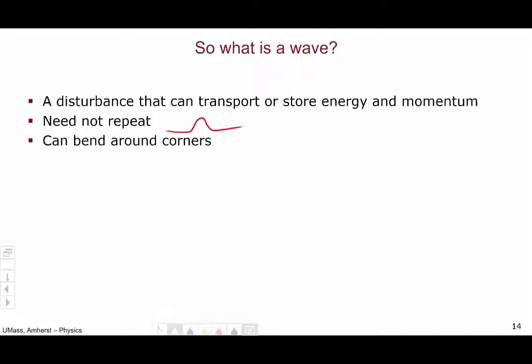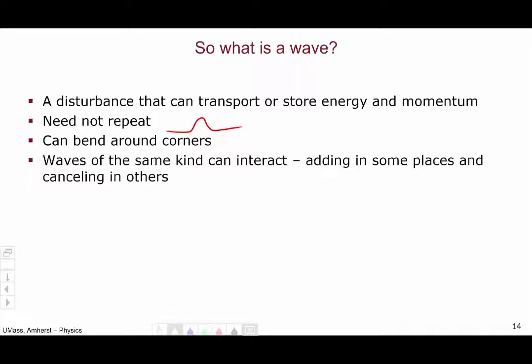A wave need not necessarily repeat. We can have those simple pulse waves that we talked about. But a wave can bend around corners, and waves of the same kind can interact with each other or with themselves, adding in some places, canceling in other places, through this idea of interference discussed in that video. So these are sort of the fundamental characteristics of waves. They don't exist at a particular place. They sort of spread out over a couple of different places. And they can carry energy and momentum while bending around corners and interacting with themselves or other waves of the same kind.